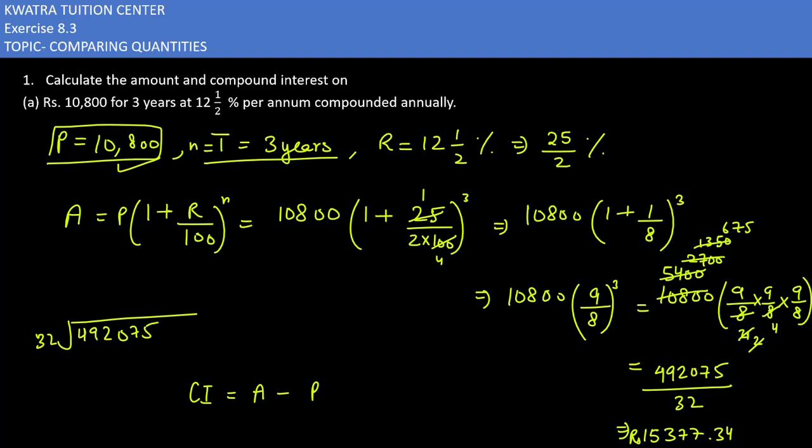And after that how much amount will you get finally? You are depositing 10,800. How much will you get? You will get around 15,000. So you can see that principle is smaller and amount is greater. The amount value has obviously increased because you have invested it. Now what is the amount value? 15,377.34 minus principle. Principle is 10,800. When you subtract you get the value 4577.35.